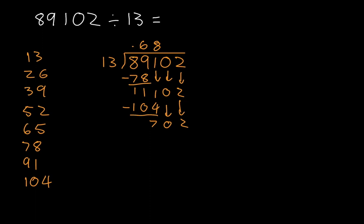Now 13 doesn't go into 7, but 13 goes into 70, and it goes in 1, 2, 3, 4, 5 times. 13 times 5 is equal to 65. We subtract—then we subtract 65 from 70, so 70 minus 65 is just 5. We bring down the 2. Now 13 doesn't go into 5, but 13 goes into 52, and it goes in 1, 2, 3, 4 times. 13 times 4 is 52, and we subtract it.